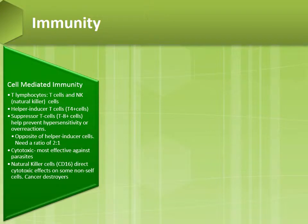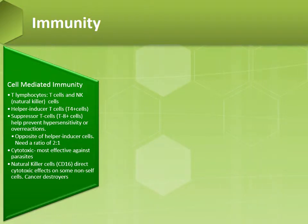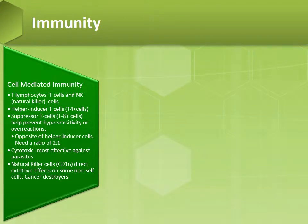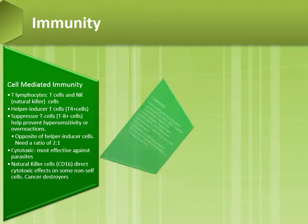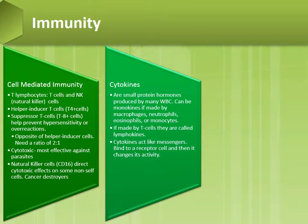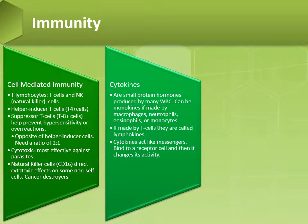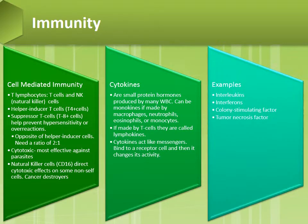Cell-mediated immunity involves T lymphocytes, including T cells and natural killer cells, helper-inducer T cells, suppressor T cells, cytotoxic cells, and natural killer cells. Cytokines are small protein hormones produced by many white blood cells — they are called monokines if made by macrophages, neutrophils, or eosinophils, and lymphokines if made by T cells. Cytokines act like messengers that bind to a receptor cell and change its activity. Examples include interleukins, interferons, colony-stimulating factor, and tumor necrosis factor.